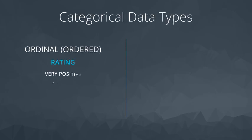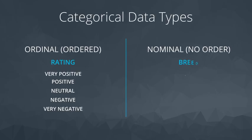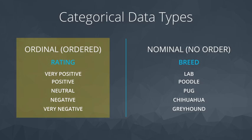We can divide categorical data types further into categorical ordinal and categorical nominal. First, let's look at categorical ordinal data.